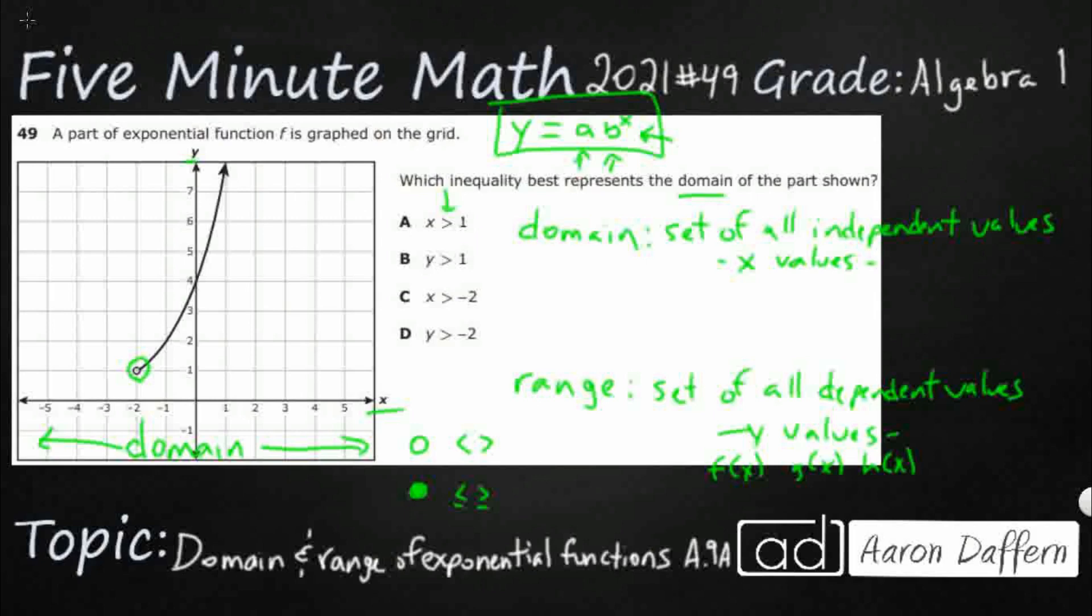And so our domain is going to be greater than negative 2. There's nothing less than negative 2. It's simply greater than negative 2. Now, it stops right here at 1. You notice how it stops. It goes from negative 2 to 1.